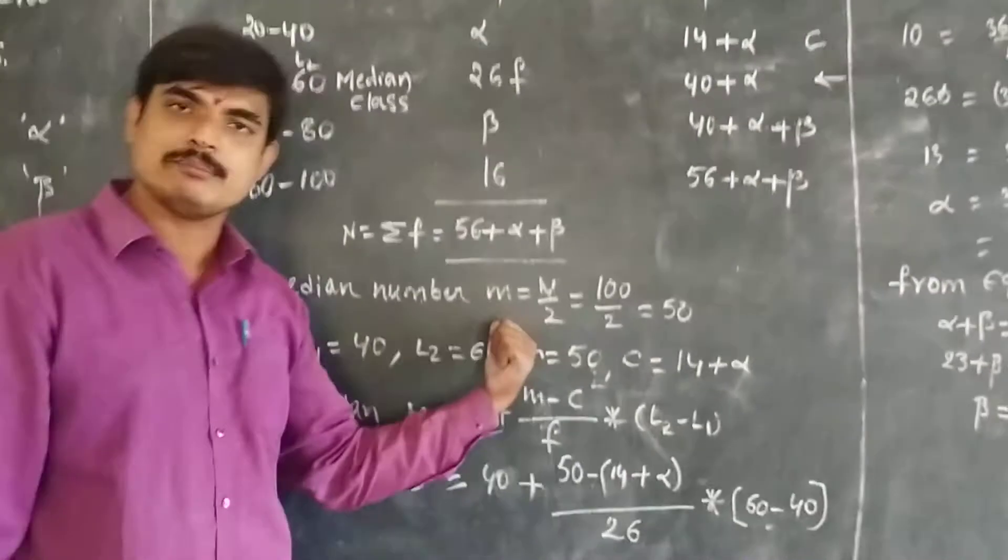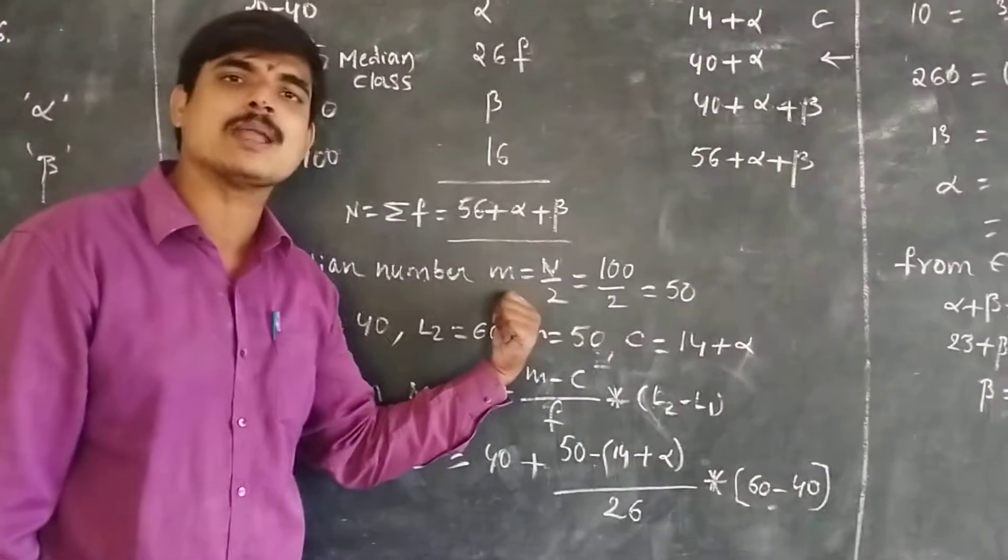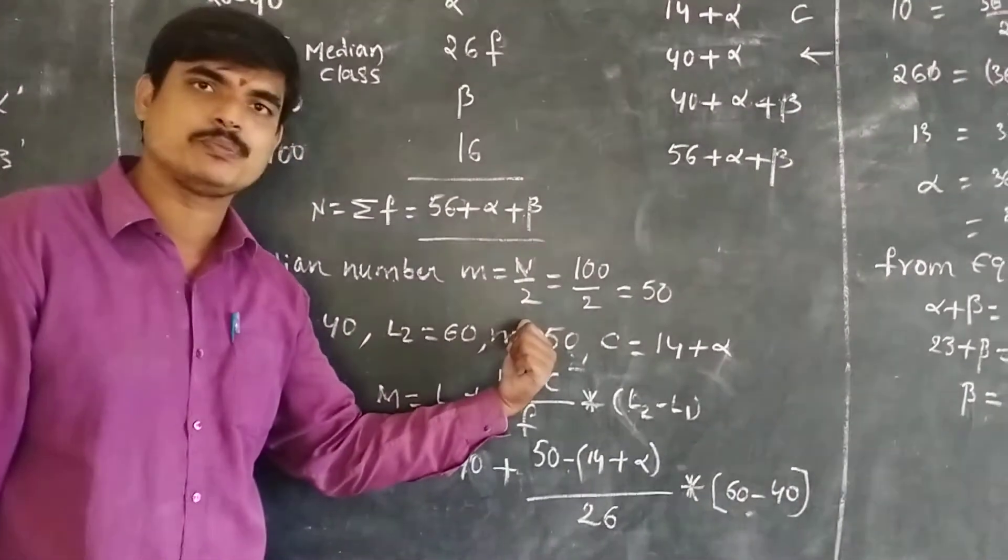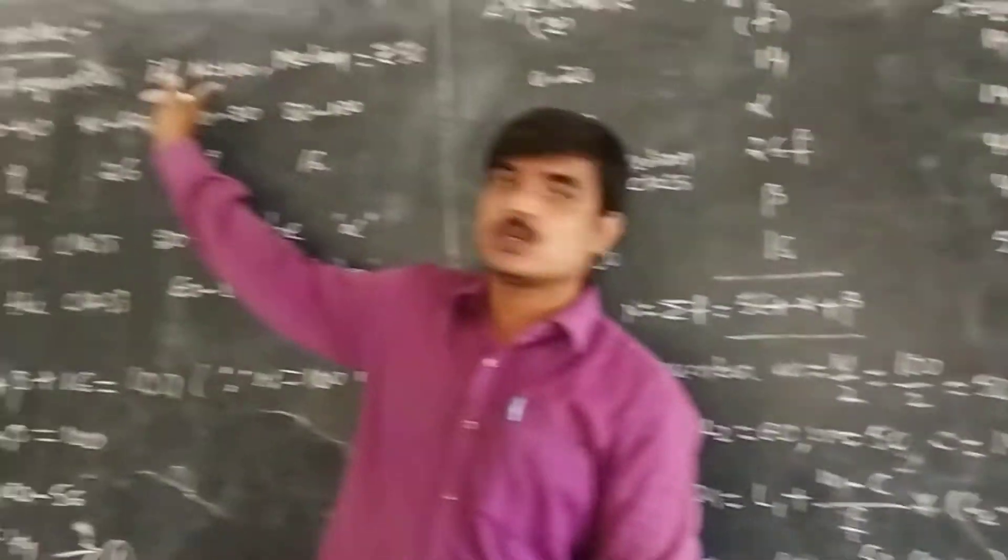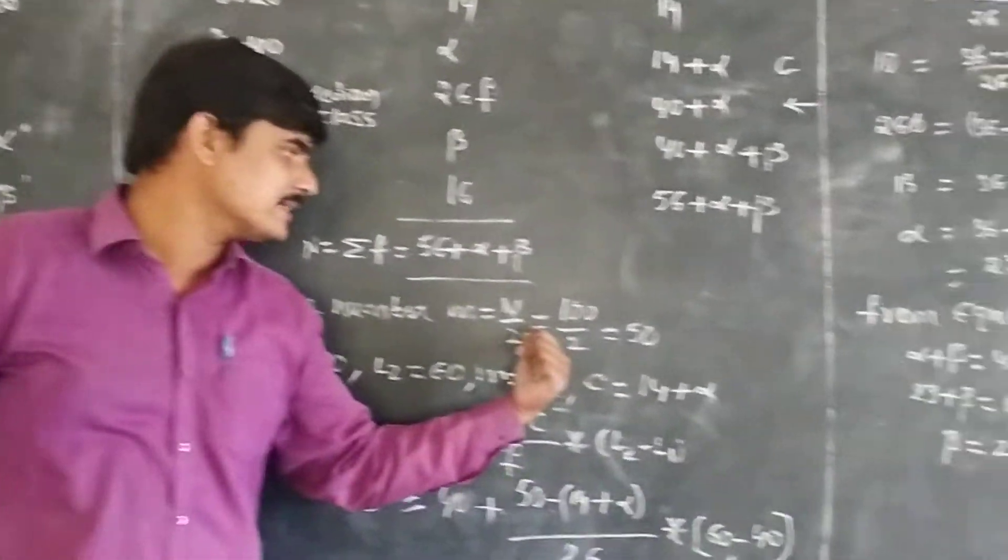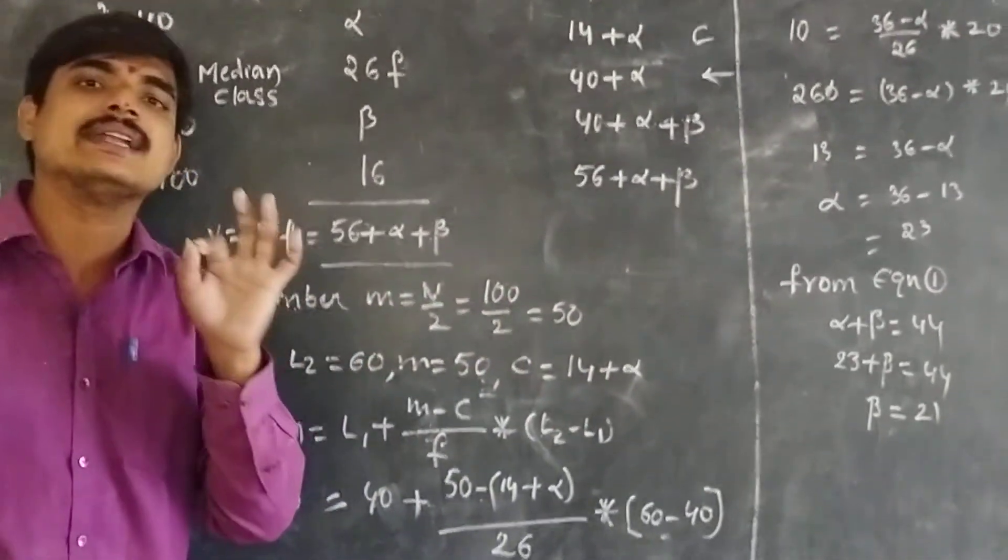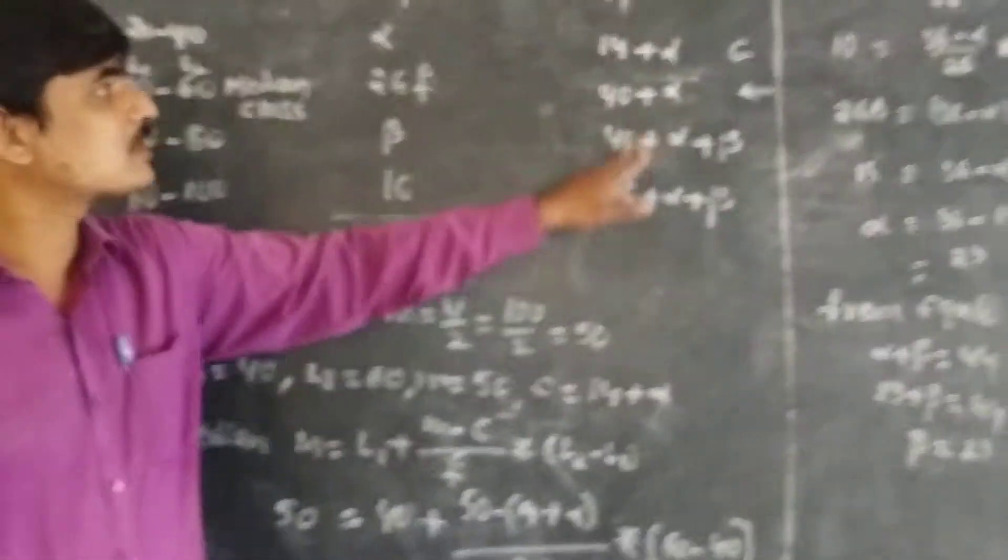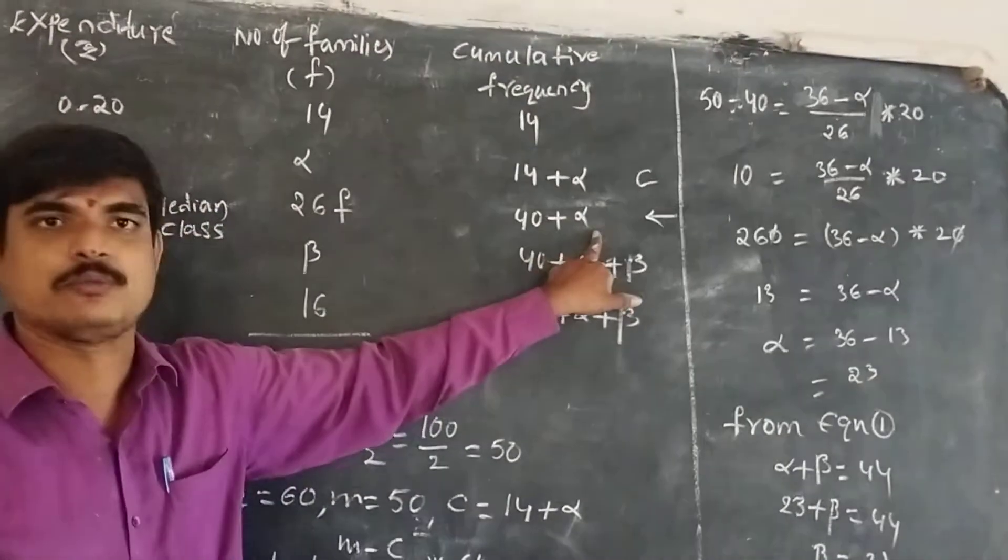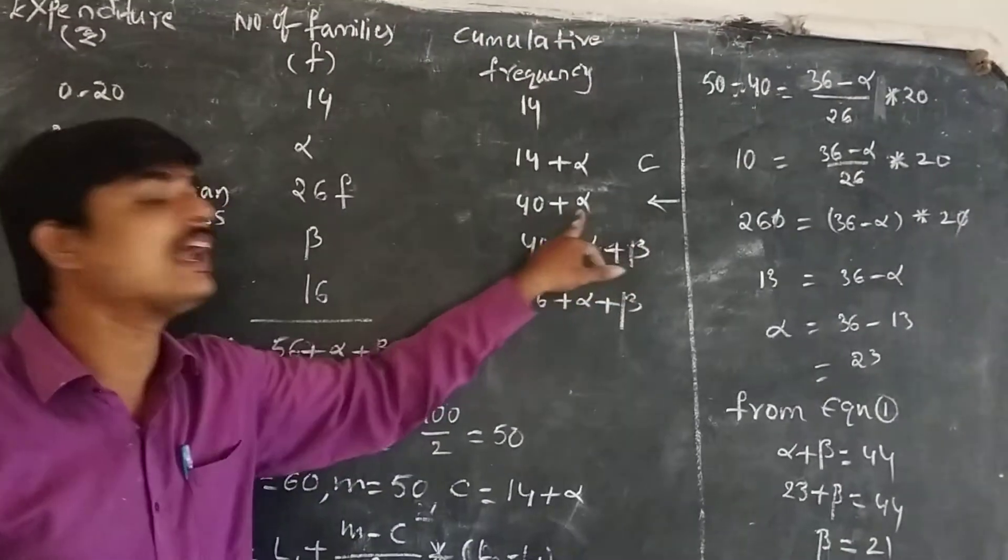Now we calculate the median. The formula for median is N by 2. We already know the value of N is 100, so N by 2 equals 50. The 50 is the median number. This median number in the cumulative frequency lies in this class.